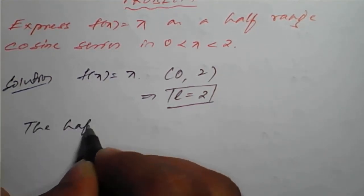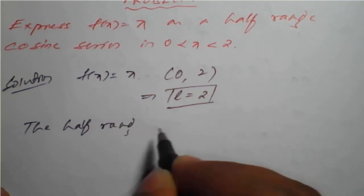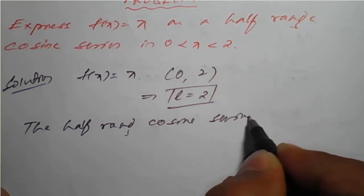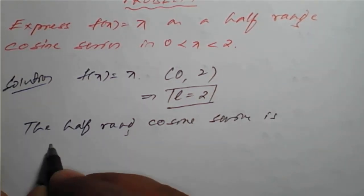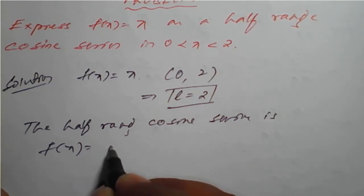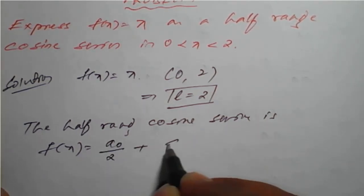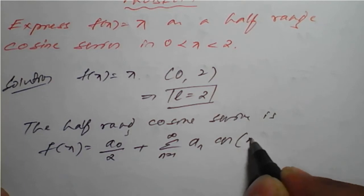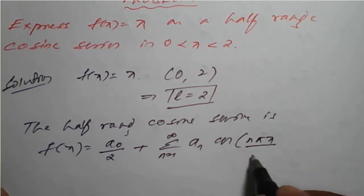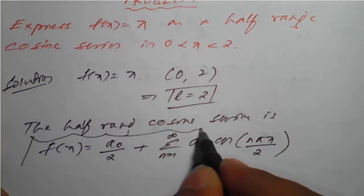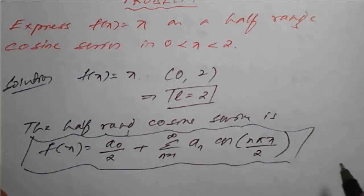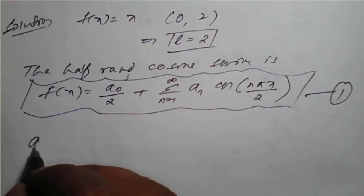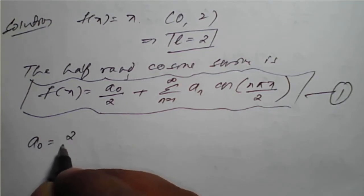The half range cosine series is given by: f(x) = a₀/2 plus summation from n=1 to infinity of aₙ times cos(nπx/L), where L = 2. We will call this equation number 1.